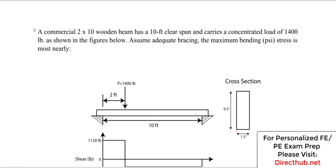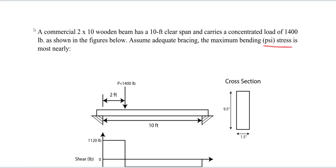So it's a 2x10 nominal dimensions. These are the nominal dimensions. What we're given in the cross section are the actual dimensions. We're going to use the actual dimensions when we're doing all the calculations. We're told to assume adequate bracing and to find the maximum bending stress in psi is most nearly what?